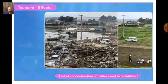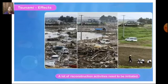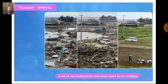A lot of reconstruction activities need to be initiated after a tsunami, as properties, houses, crops, and electric poles are badly destroyed. People need to be moved to safer places. When there is a forecast about cyclones and tsunamis, people take their belongings and animals and move to a safer place to protect themselves from these devastating natural calamities.